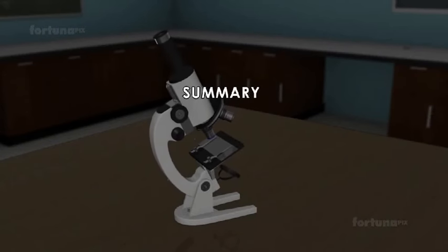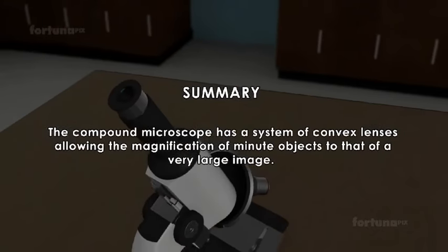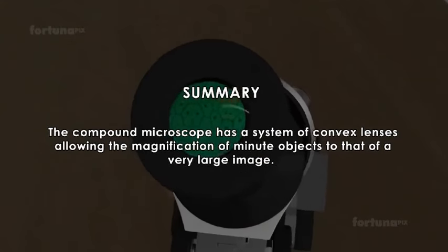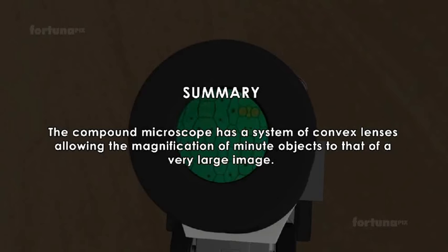Summary. The compound microscope has a system of convex lenses allowing the magnification of minute objects to that of a very large image.